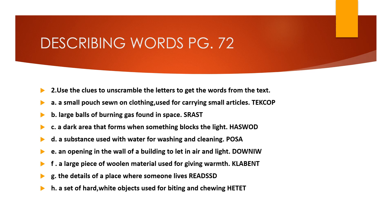Describing words, exercise 2. See on the screen: use the clues to unscramble the letters to get the words from the text. Clues are given here and you have to write the correct word. A small pouch sewn on clothing used for carrying small articles — that is 'pocket'. Large balls of burning gas found in space — 'stars'. A dark area that forms when something blocks the light — 'shadow', S-H-A-D-O-W.